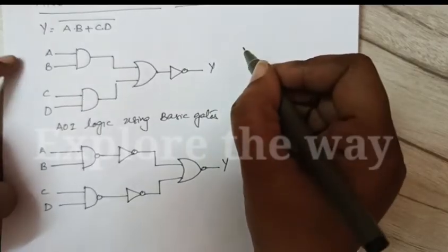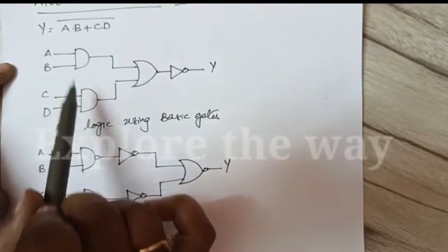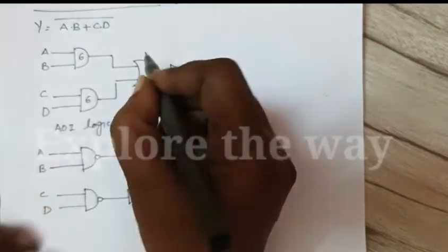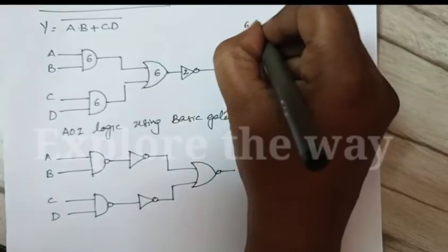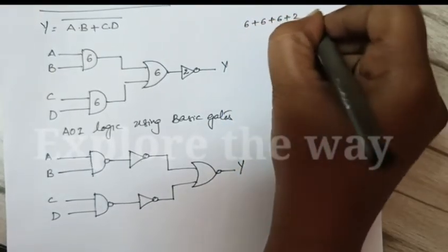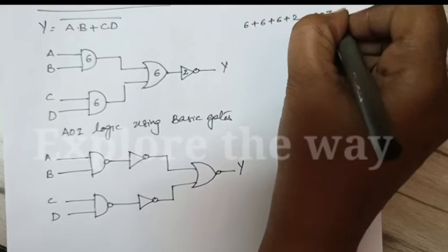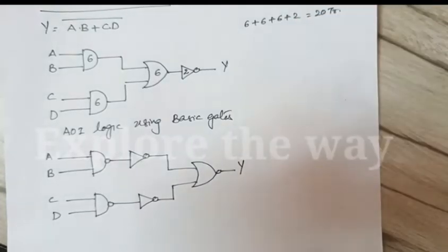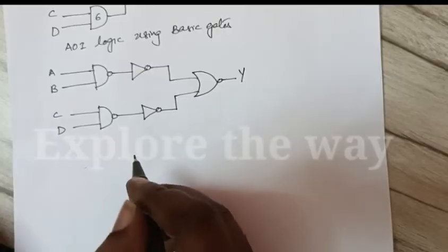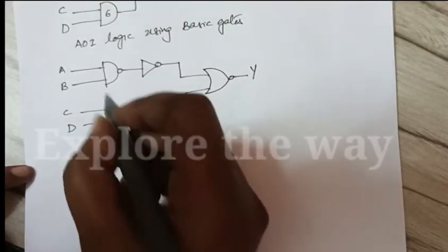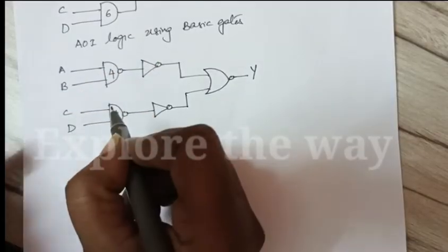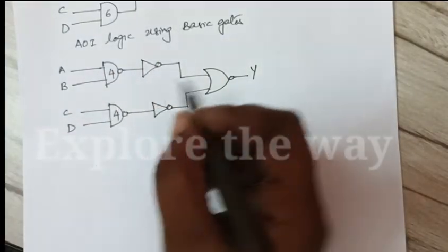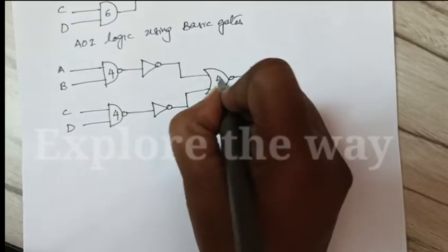In the case of basic gates, 20 transistors are required to implement using basic gates. Universal logic gates: 4 transistors here, 4 transistors.